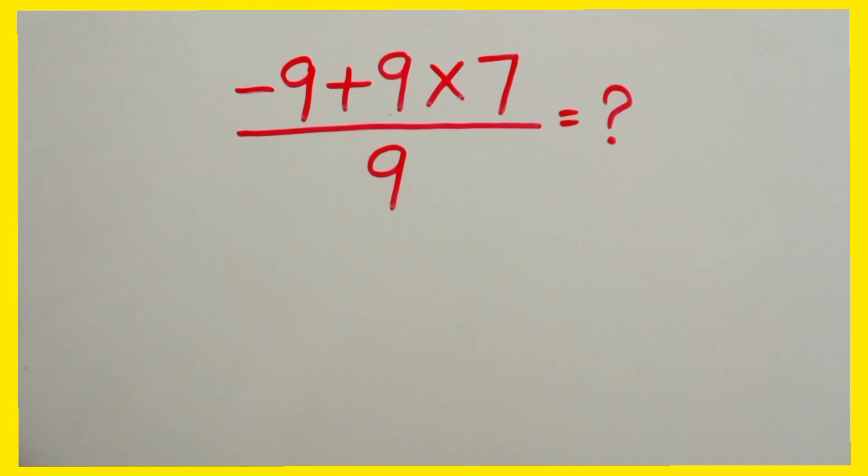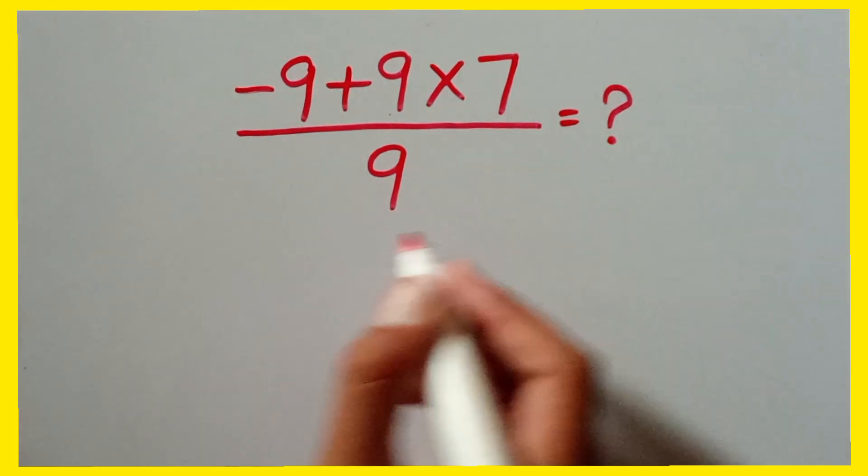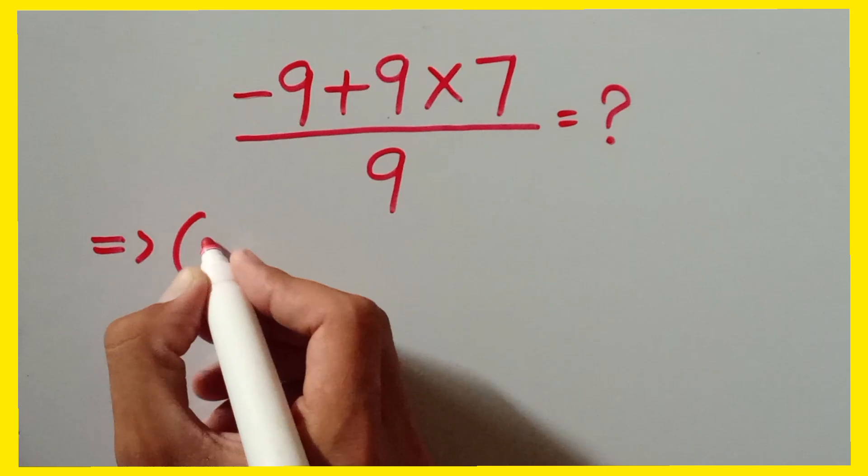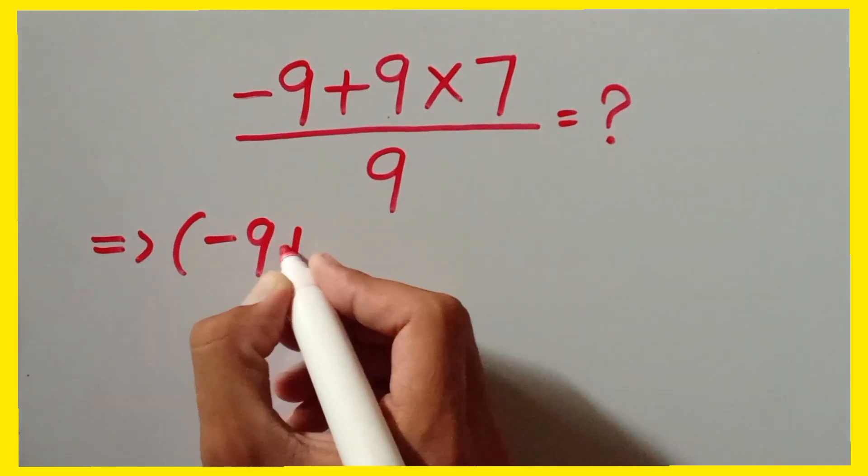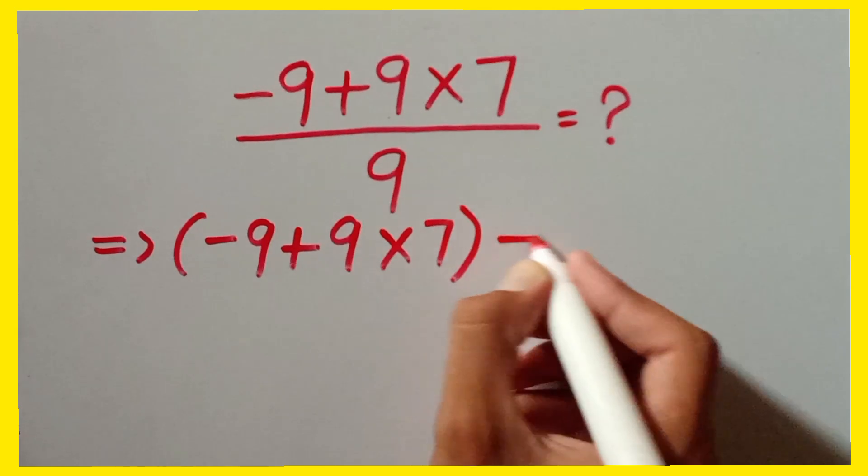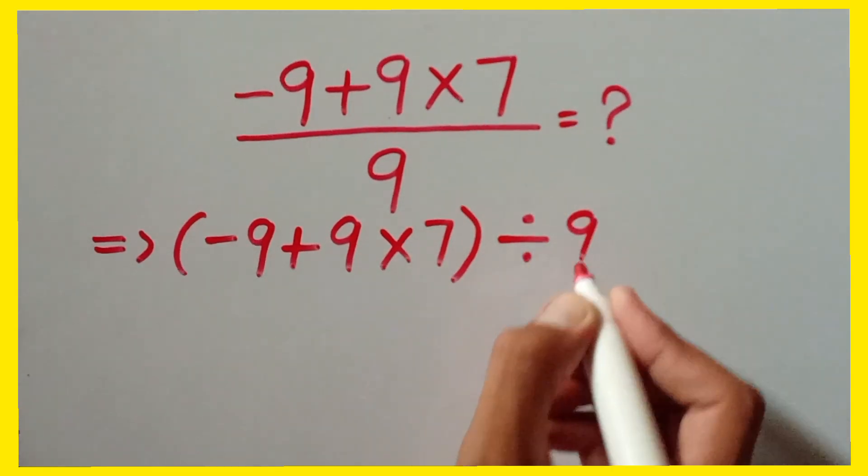If you are new to my channel, kindly subscribe for more videos. So firstly we can solve it. In the first step, we can write it as parentheses: minus 9 plus 9 times 7, divided by 9.